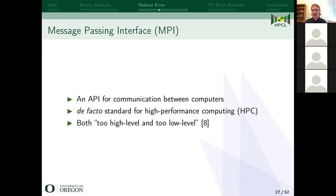I'm going to talk about the Message Passing Interface, or MPI. It's an API for communication between computers — specifically parallel computers — and it is the de facto standard for high-performance computing. It has been described as both too high-level and too low-level. The reason is it has some abstractions above the level of a typical programming language like C, C++, or Fortran, and some abstractions which are lower level.